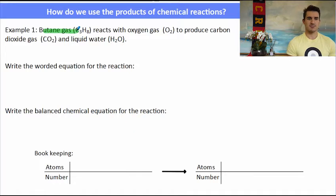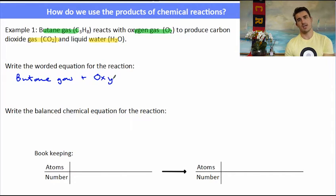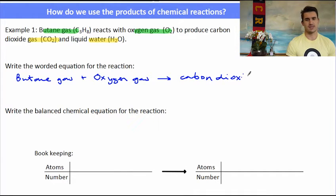Example one, butane gas reacts with oxygen gas to produce carbon dioxide and liquid water. And you're given the formulas for these compounds at the moment. Butane plus oxygen reacts to form carbon dioxide and water. That is the worded chemical equation. We can include the states if we want, but for the worded chemical equation, it's not particularly important. The states are very important for when we go to do the balanced chemical equation.